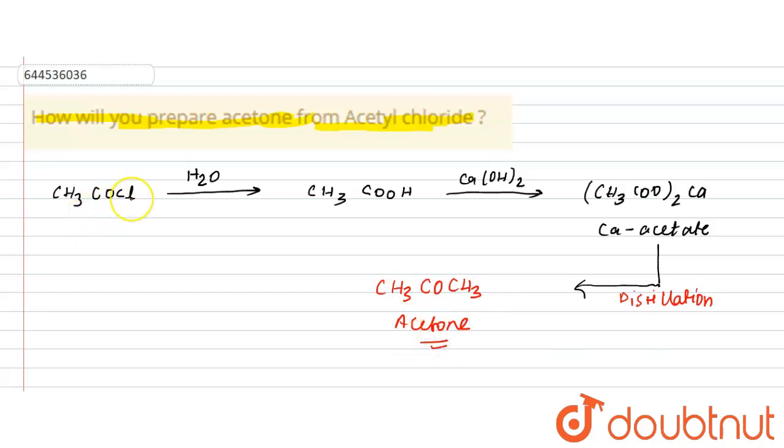So from acetyl chloride, you have first converted it into acid. Then with Ca(OH)2, you have formed the calcium acetate salt which on distillation is going to give you acetone. This is the entire sequence of reaction in order to prepare acetone from acetyl chloride.